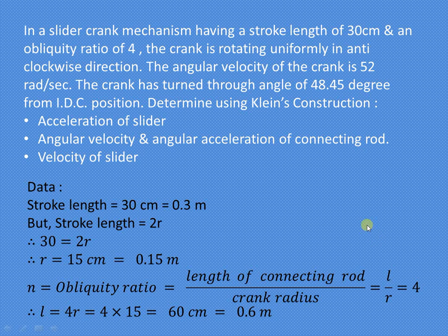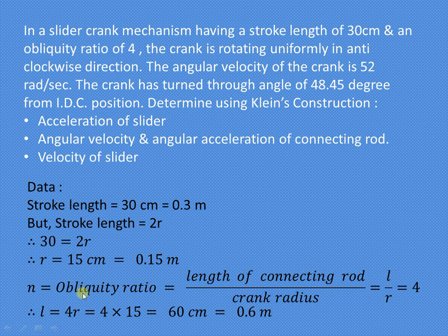Let us understand how to find the velocity and acceleration of a piston connecting rod using Klein's construction. In this example, the stroke length is given as 30 centimeters, so the crank length or radius is 15 centimeters. The obliquity ratio is given as 4, which is the ratio of the connecting rod length to the crank radius (l/r), so the connecting rod length l = 4 × 15 = 60 centimeters or 0.6 meters.